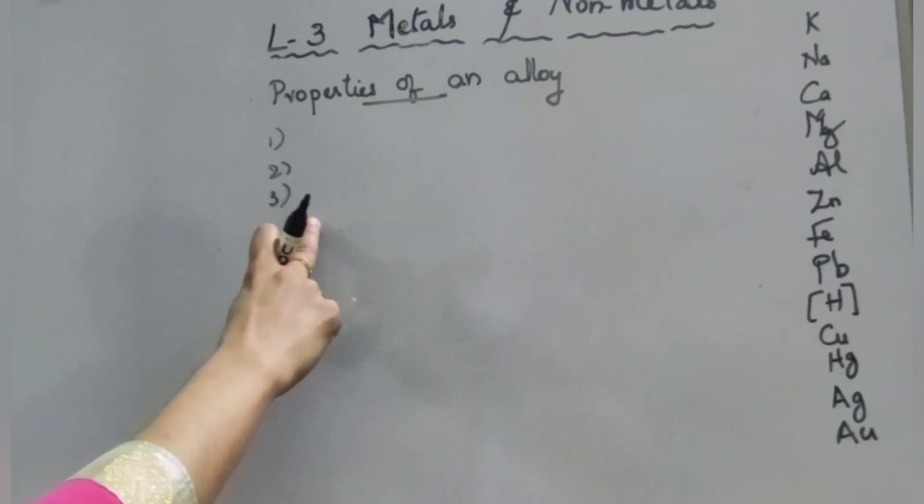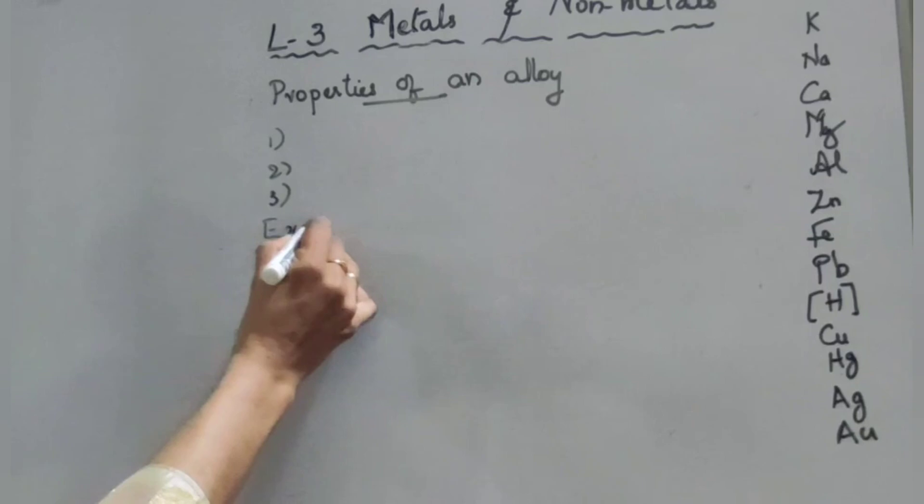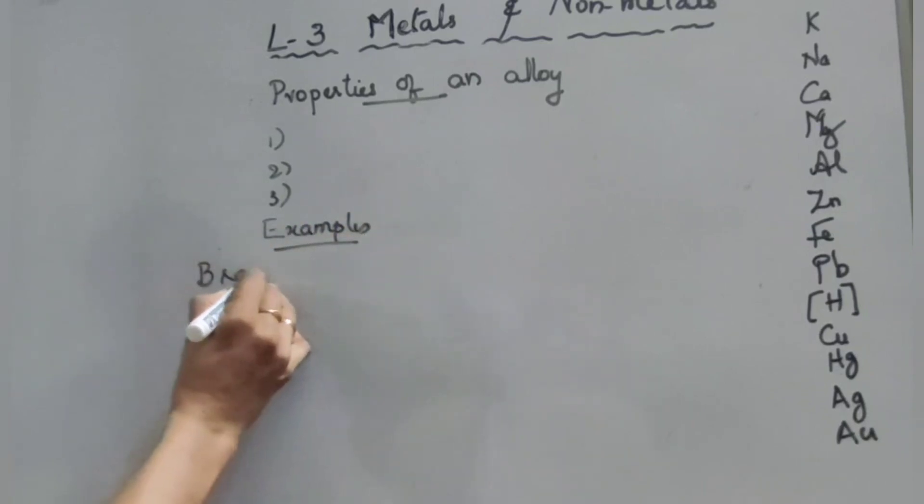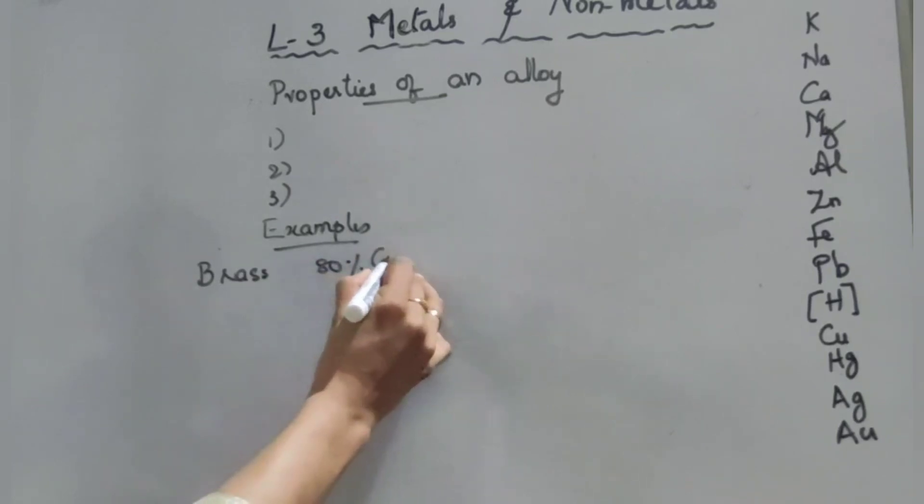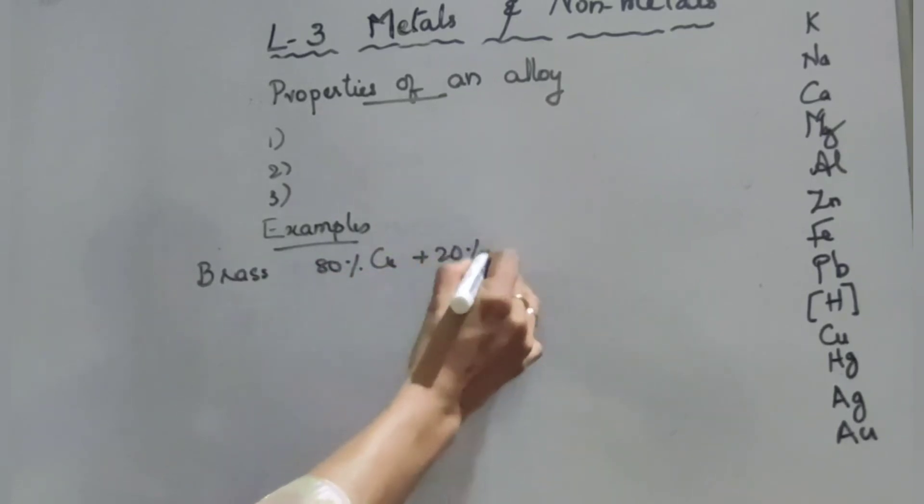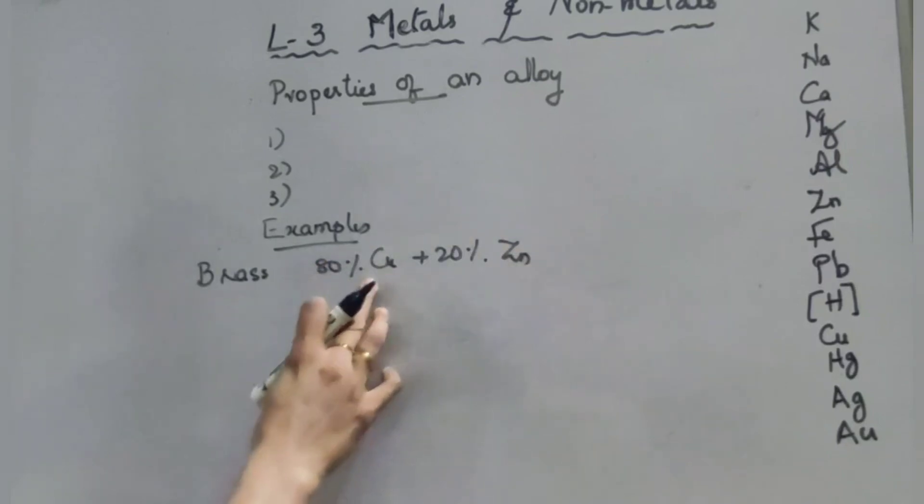Examples of alloys. First one: brass. Brass means we know that 80% copper and 20% zinc, or you can write alloy of copper and zinc.